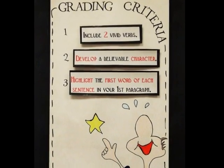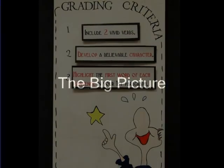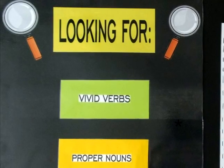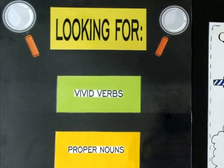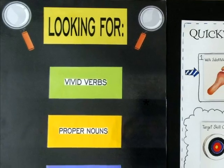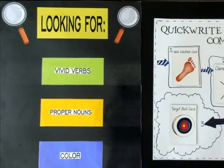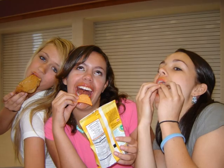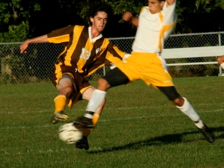Step one: students have to understand the big picture. In other words, let them know the thing or things you are looking for. For example, you might say this week you are going to write narrative snapshots using characters who jump off the page, verbs that sizzle, and colors that pop.